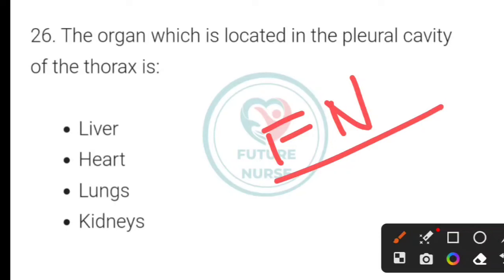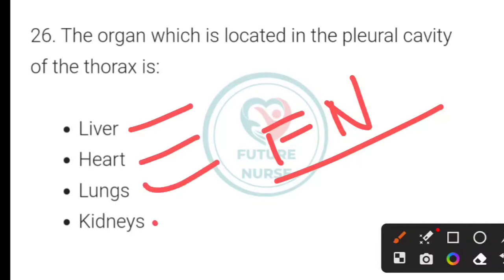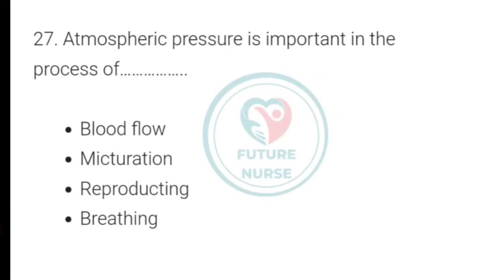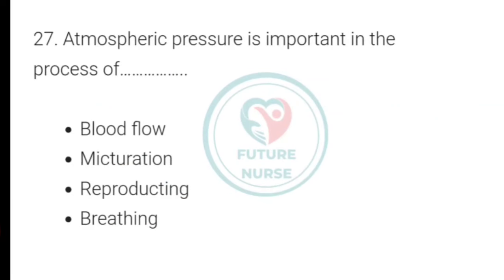First question: which organ is located in the pleural cavity of the thorax? Options: liver, heart, lungs, and kidneys. The organ located in the pleural cavity of the thorax is lungs — option C is the correct answer.